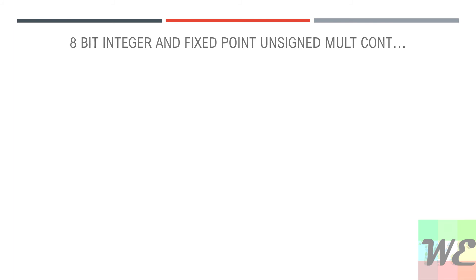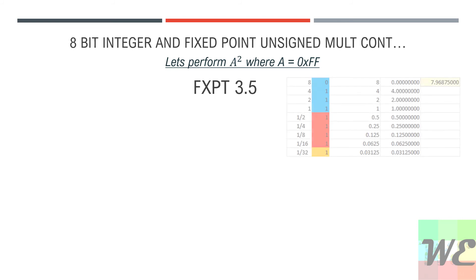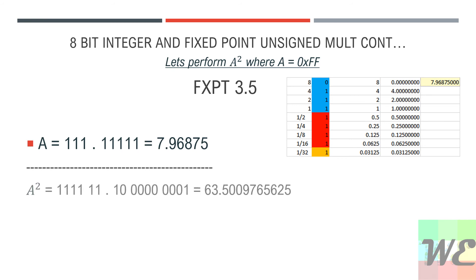Now we're going to do another unsigned multiplication example but move where the fixed-point precision is. Instead of 4.4, we're using 3.5 notation with A squared where A equals 0xFF. So now we have 7.96875, and when we square that, we end up with 6 bits above and 10 bits below the decimal point.